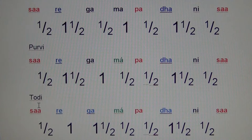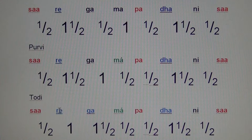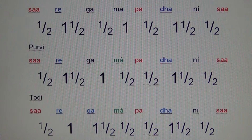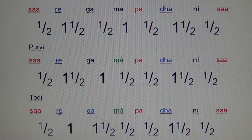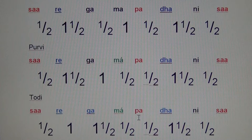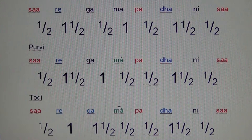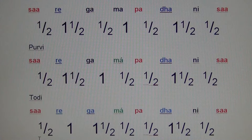For Todi, it is the same as Purvi — re and dha are lowered or flattened, and ma is sharpened — but now instead of shuddh ga we have komal ga. So in other words, re, ga, and dha are flattened or lowered, and ma is sharpened or tivra.